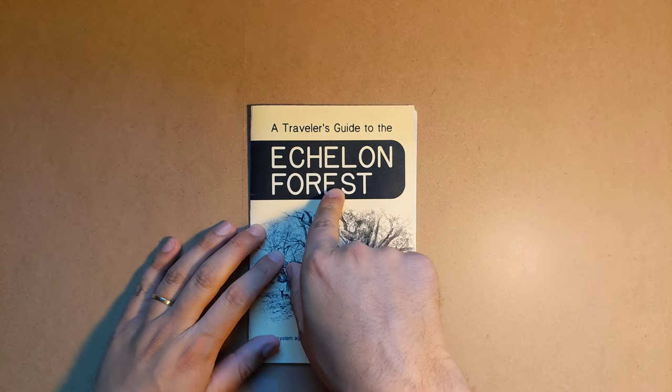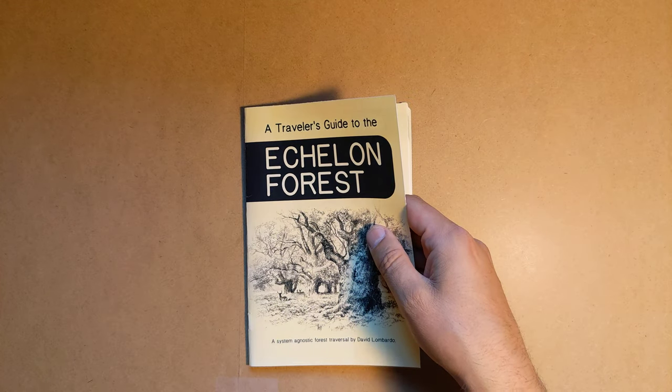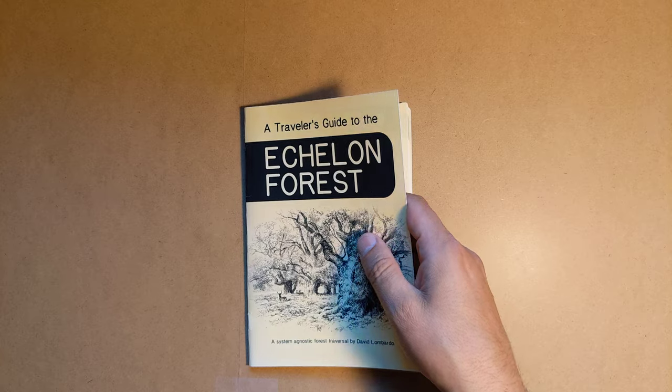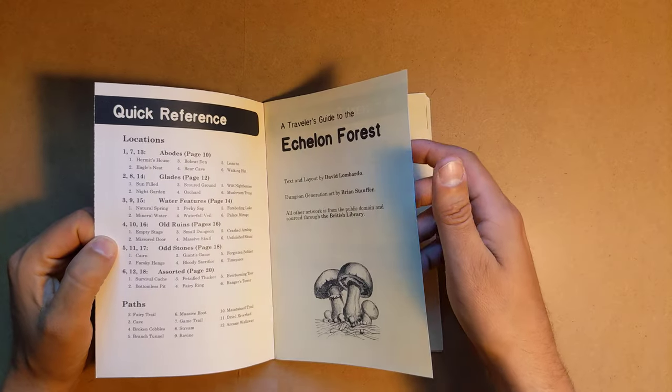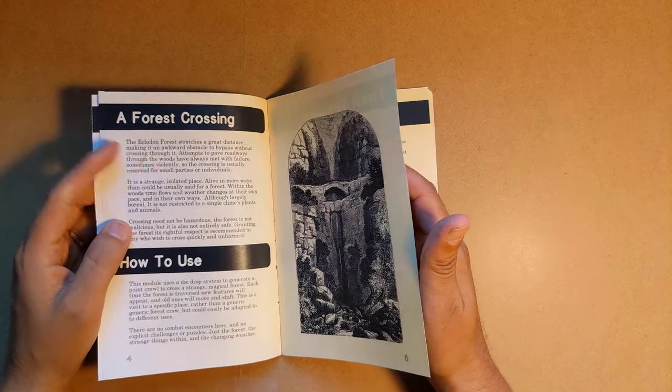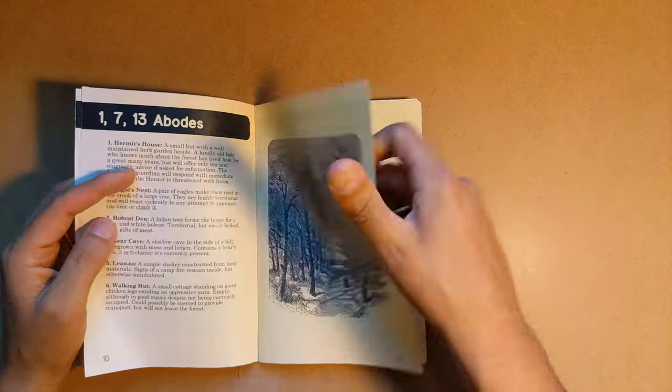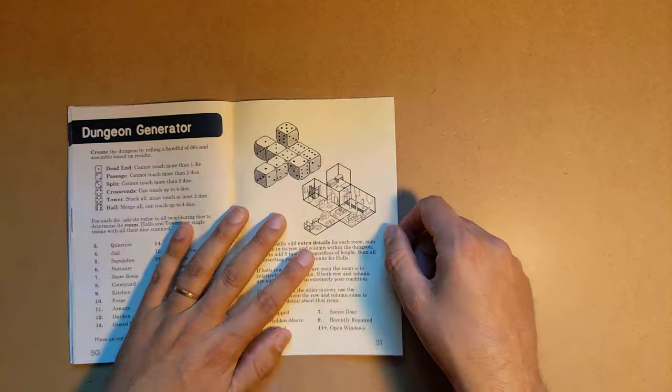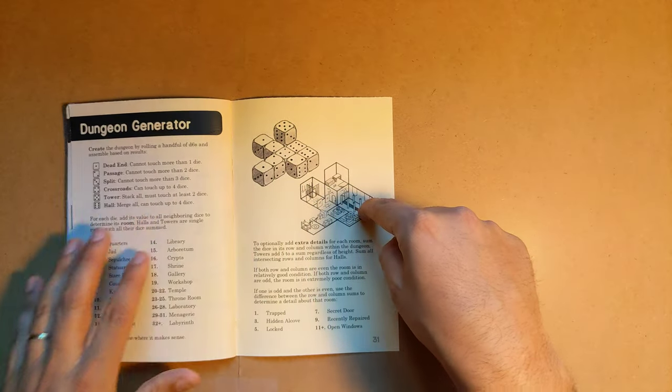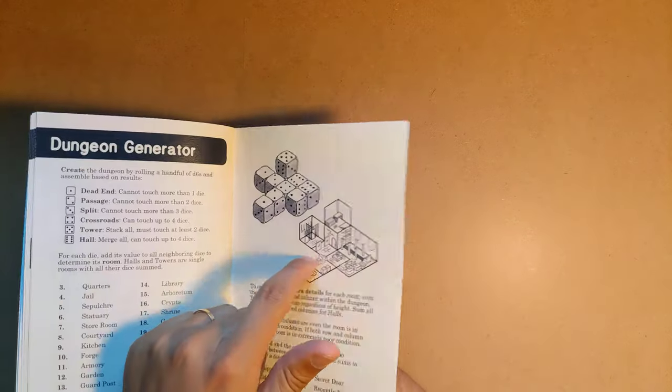Next is a Traveler's Guide to the Echelon Forest. This is by David Lombardo, also known as Awkward Turtle. Basically, it's a toolkit for generating forest point crawls that come with features and weather and paths and elevation, points of interest, points between locations. So you create your own kind of weird-ass forest with this thing. And you can see David's awesome little dungeon generator stuck in there, which I freaking love. You can get this separately, by the way.